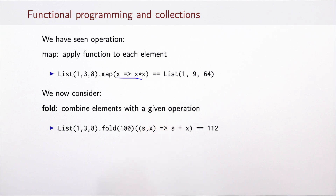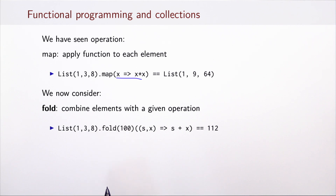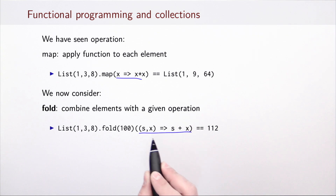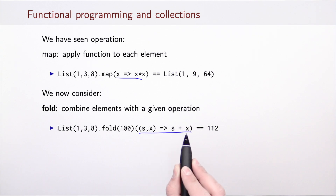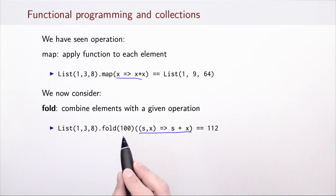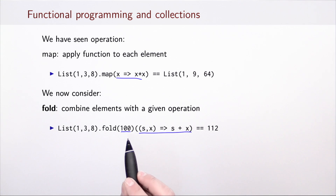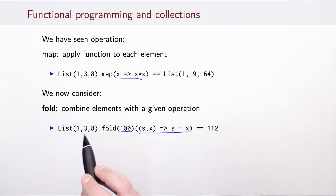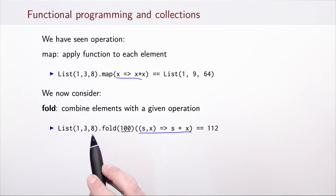What is an example of fold? If we take the same list 1, 3, 8 and fold it with the sum operation — a binary operation that takes two values and produces their sum — and with a starting element of 100, we simply compute the sum starting from 100 of all elements. So the result is 100 plus 1 plus 3 plus 8, or 112.